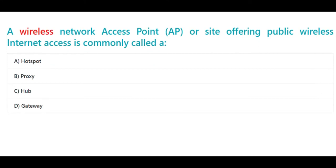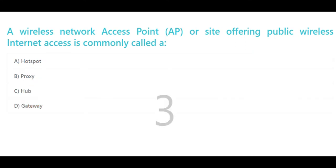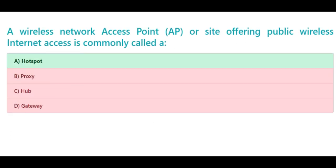A wireless network access point (AP) or site offering public wireless internet access is commonly called a: a. Hotspot, b. Proxy, c. Hub, d. Gateway. The correct answer is a. Hotspot.